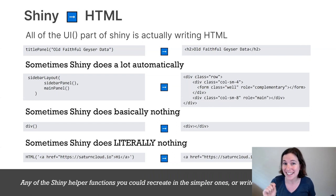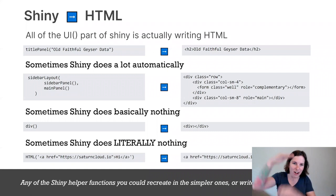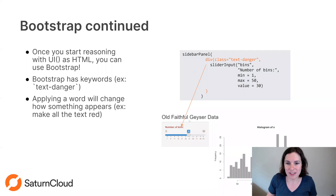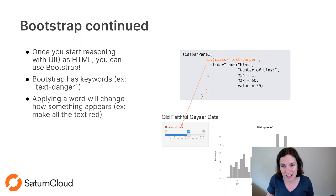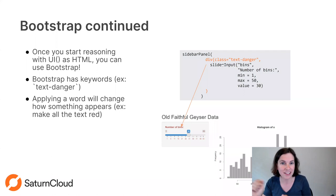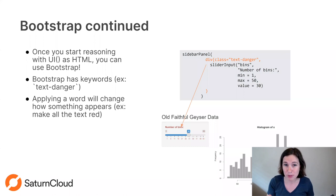This is maybe the single most important thing of this entire webinar: when you're writing Shiny, you're actually writing HTML. Shiny is doing clever work for you, but you could have done it all yourself — taken any Shiny app and made one enormous HTML statement. When we talk about Bootstrap, you can start applying Bootstrap rules automatically. For instance, Bootstrap has a class called text-danger which makes text red. If I use a div inside my R code with class text-danger, everything inside the div turns that red color.